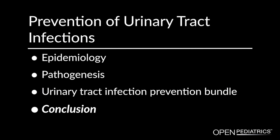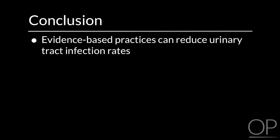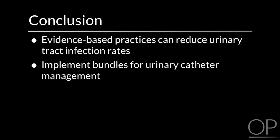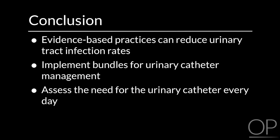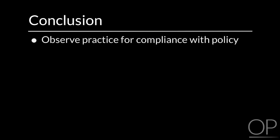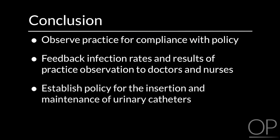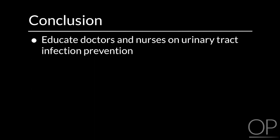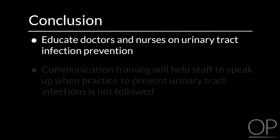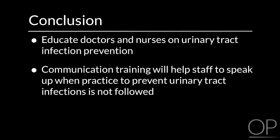Conclusion. Evidence-based practices can reduce urinary tract infection rates. One should implement bundles for urinary catheter management, assess the need for the urinary catheter every day, observe practice for compliance with policy, and provide feedback on infection rates and results of practice observation to doctors and nurses. Units should establish policy for the insertion and maintenance of urinary catheters and educate doctors and nurses on urinary tract infection prevention. Communication training will help staff to speak up when practice to prevent urinary tract infections is not followed.